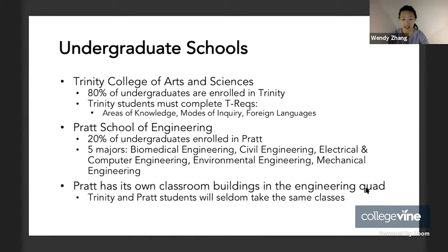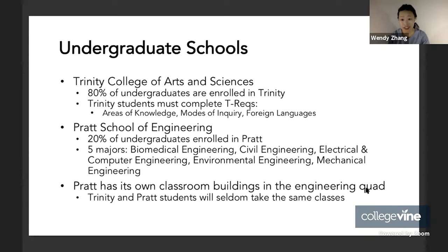There are two undergraduate schools at Duke. One is the Trinity College of Arts and Sciences, in which around 80% of undergraduates are enrolled, as well as the Pratt School of Engineering, which is a little bit more concentrated at 20% of undergraduates. There are five majors within Pratt: Biomedical Engineering, Civil Engineering, Electrical and Computer Engineering, Environmental Engineering, and Mechanical Engineering.